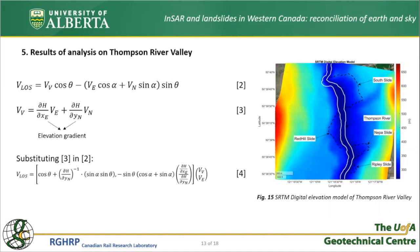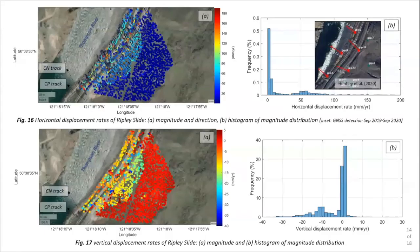Figure 16 shows the magnitude, direction, and distribution of horizontal movements of Ripley. In-situ GPS-like measurements show points moving toward the Thompson River at rates of about 50 to 70 mm per year. The InSAR results also show that the majority of active points are concentrated around values of 50 to 80 mm per year, and other studies have reported horizontal displacements up to 130 mm per year, also seen in these results. Figure 17 presents the vertical displacement rates, showing that most points are moving downward at rates of about 10 mm per year. As a result, the average travel angle of Ripley is computed to be about 10 degrees, which matches the translational nature of these slides.